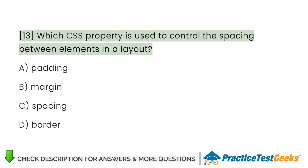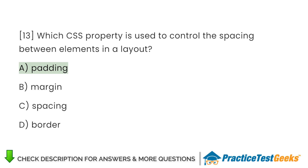Which CSS property is used to control the spacing between elements in a layout? A. Padding. B. Margin. C. Spacing. D. Border.